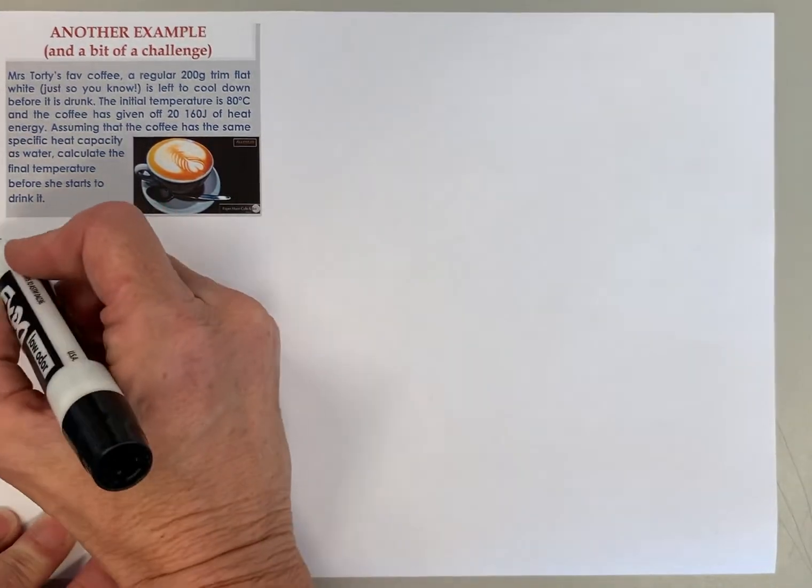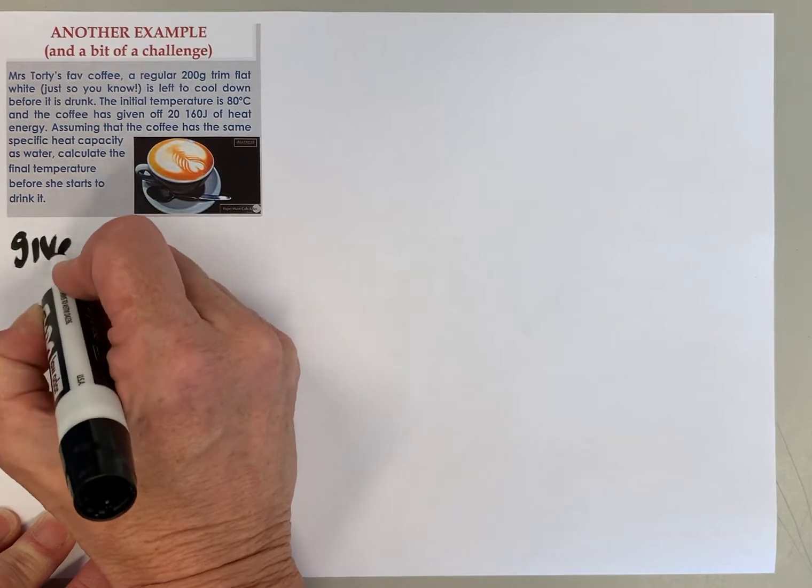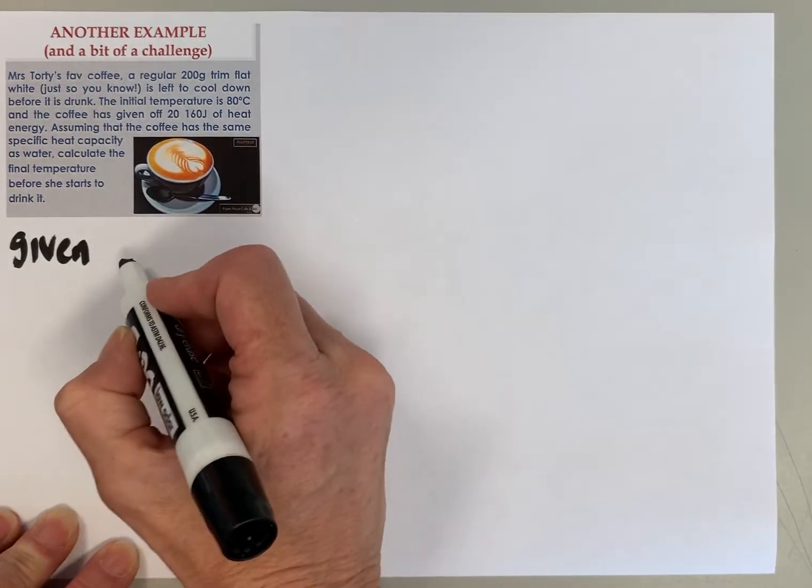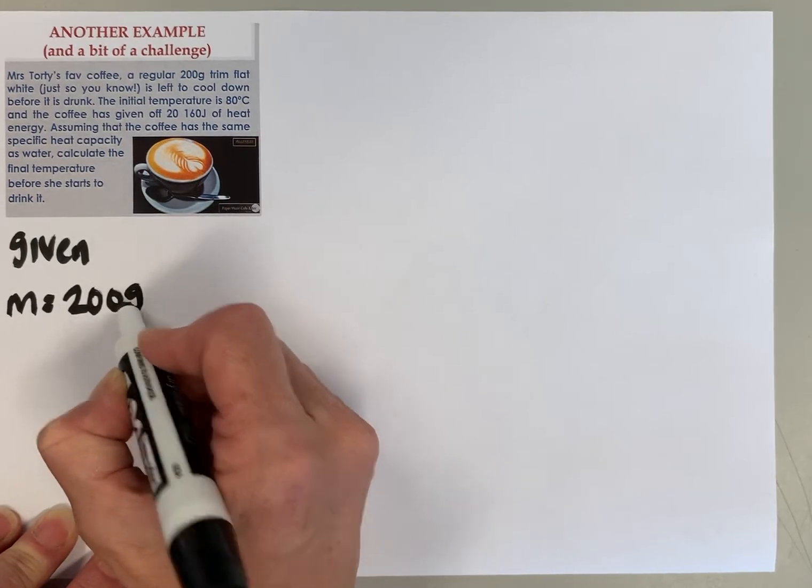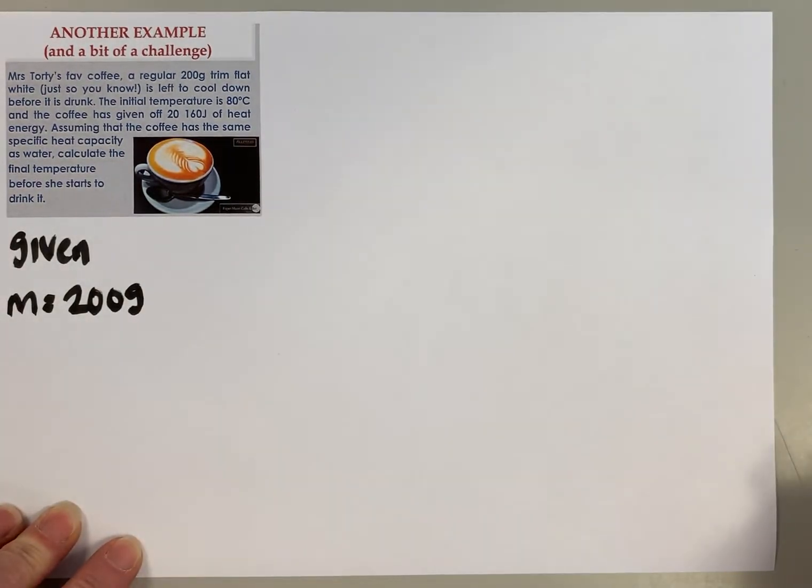So the first thing we're going to do is to write down the things that we are given. In this case we're given that the mass of the coffee is 200 grams.